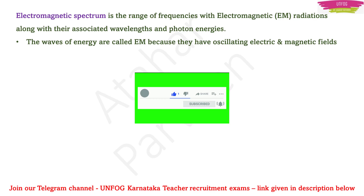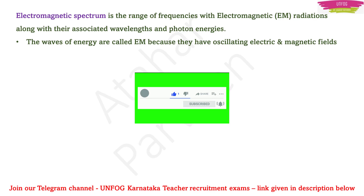The electromagnetic spectrum is the range of frequencies of electromagnetic radiations along with their associated wavelengths and photon energies. Photon energy means E is equal to H nu, where E is the energy of the photon, H is Planck's constant, and nu is the frequency of the photon.